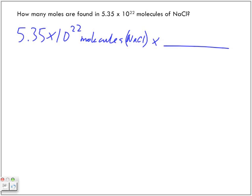So we want to cancel out molecules. We don't want those units, so we're going to put molecules here at the bottom. Now we're going to cancel out molecules. And we know that we have 6.02 times 10 to the power of 23 molecules in one mole of something.